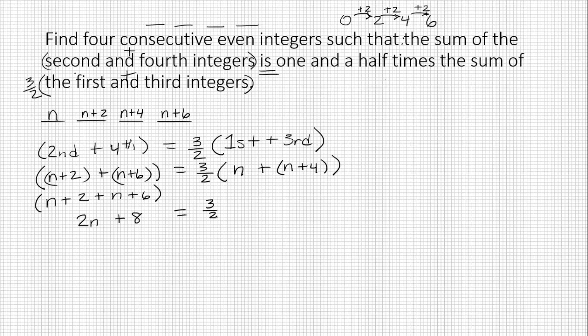And on this side, we've still got three halves, but we can drop the parentheses on the inside and add our like terms here as well. So that's going to be two n plus four. And now we've got three halves times two n plus four.